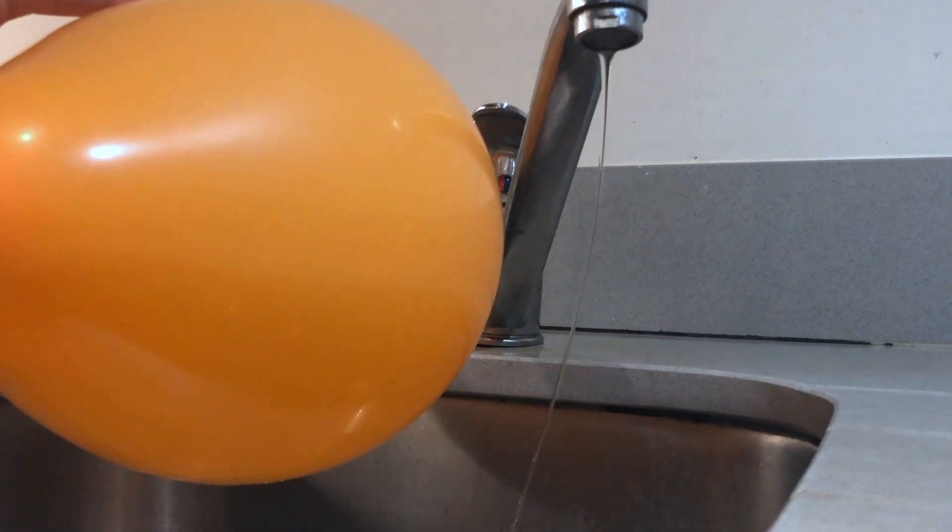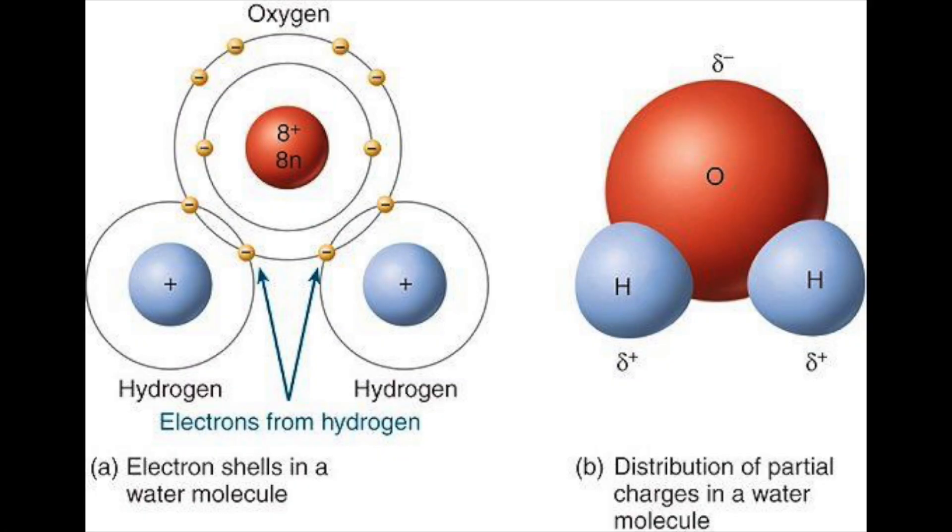This is because of water's polarity. Water has both hydrogen and oxygen that share electrons unevenly because oxygen is more electronegative than hydrogen. Therefore, the pair of shared electrons is attracted more to the oxygen, which makes oxygen partially negative and hydrogen partially positive.